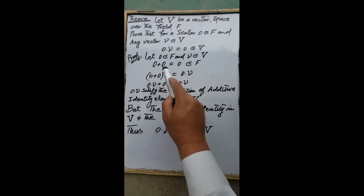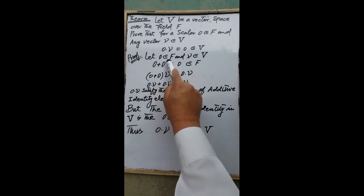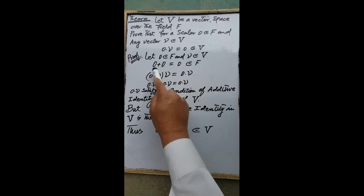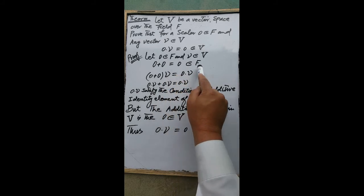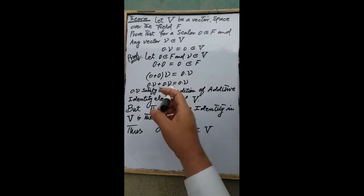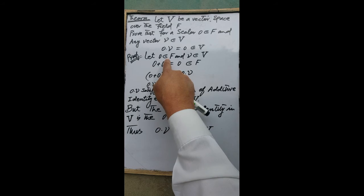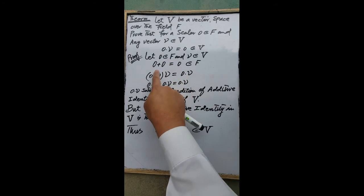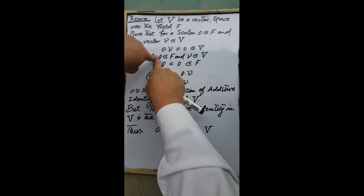Let 0 be the zero scalar in the field F. Then by the additive identity element, 0 plus 0 is equal to 0 in the field F. Since the field F is an abelian group with respect to the binary operation of addition,